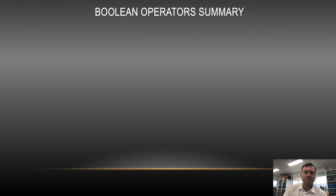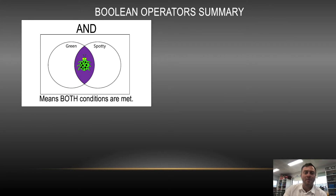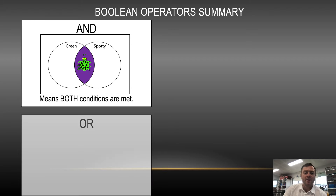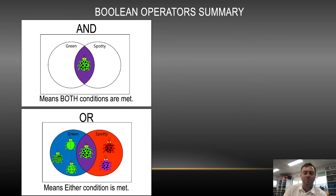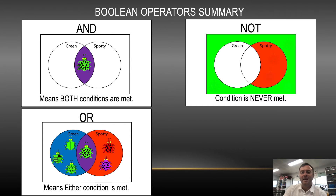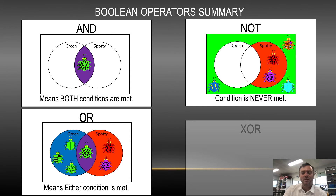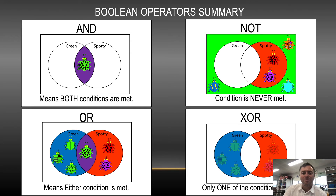So a little summary so that you've got it: AND means that both conditions are met, which means that overlap. OR means that either of the conditions are met, so you get everything — it widens your options. NOT means that the condition is never met, so it's everything that's outside. And then XOR is like OR except it removes the AND in the middle.